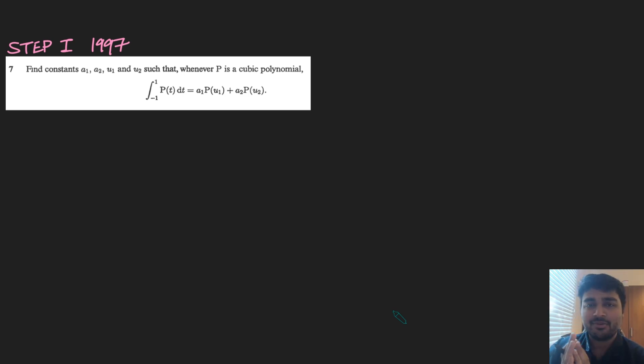Let's have a look at this one. We've got constants a1, a2, u1, and u2, which we want to find, such that whenever p is a cubic polynomial, the integral from minus 1 to 1 of p(t) dt equals a1 times p(u1) plus a2 times p(u2).